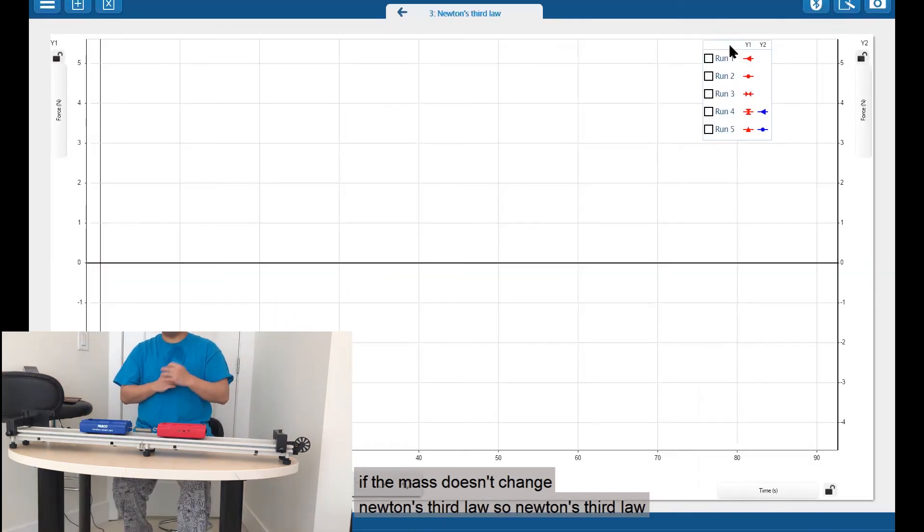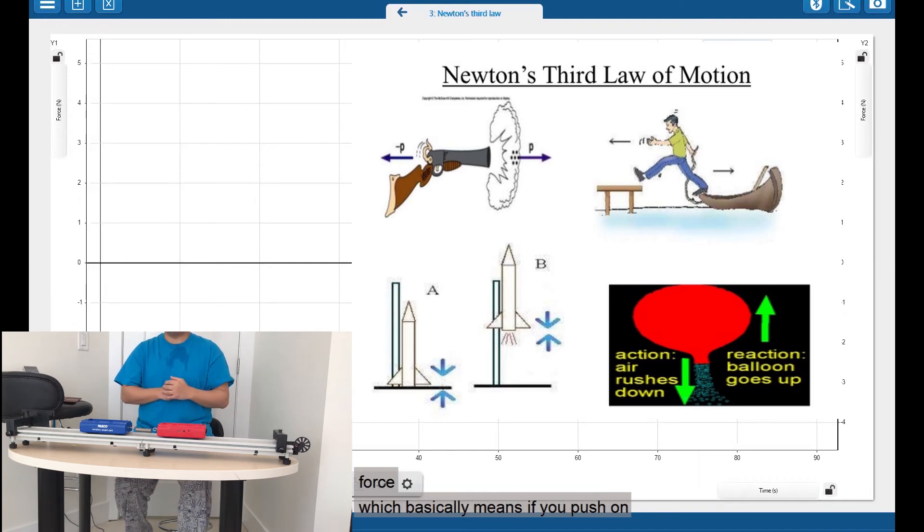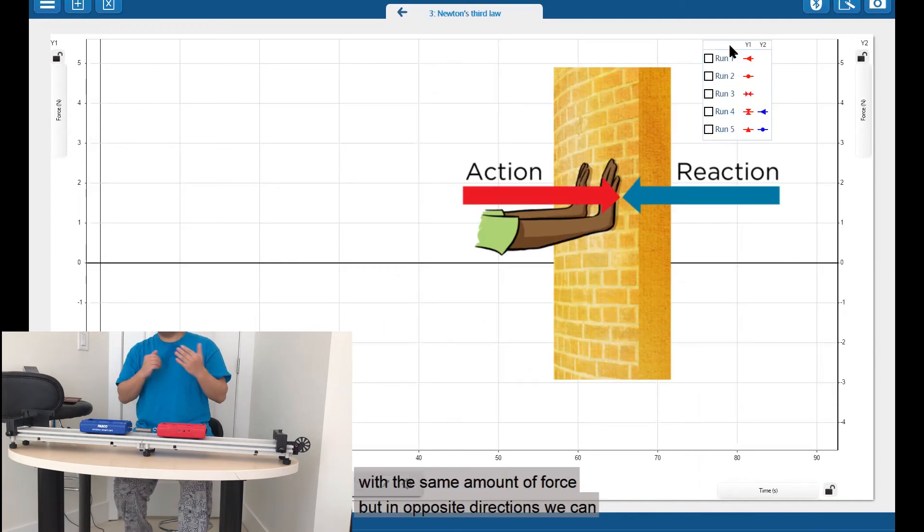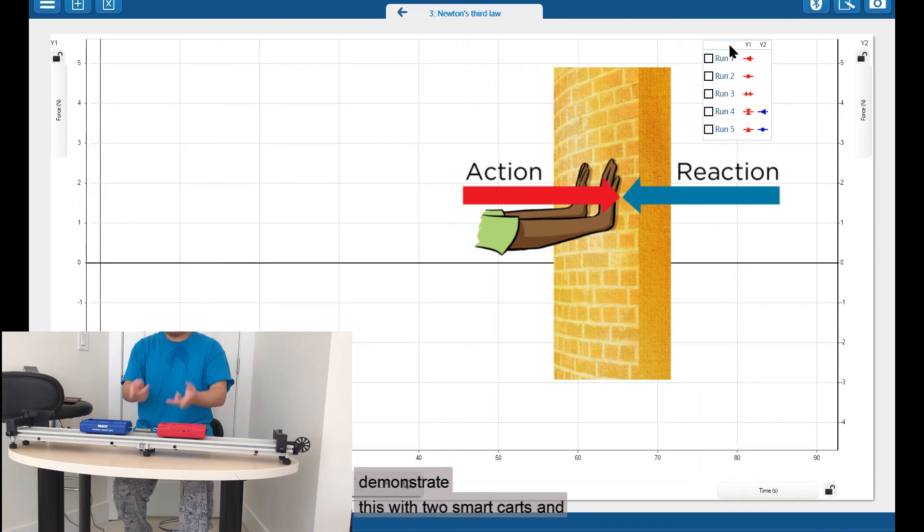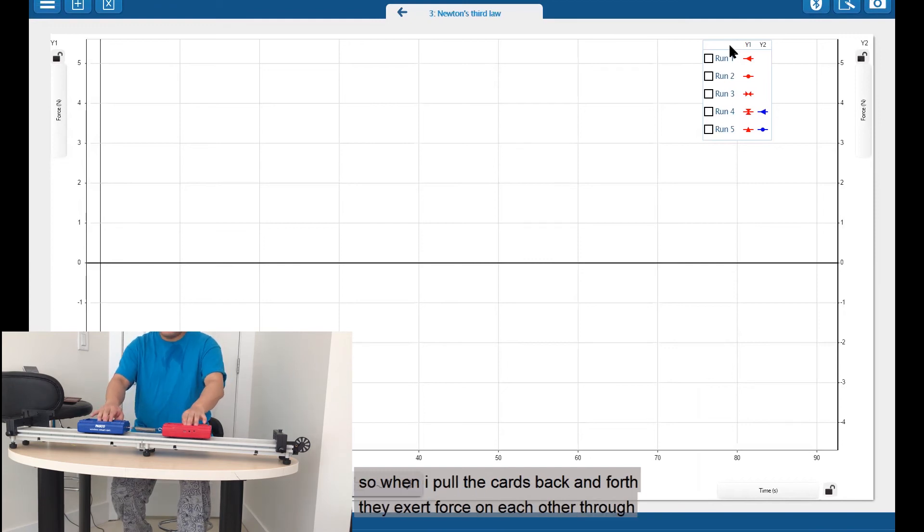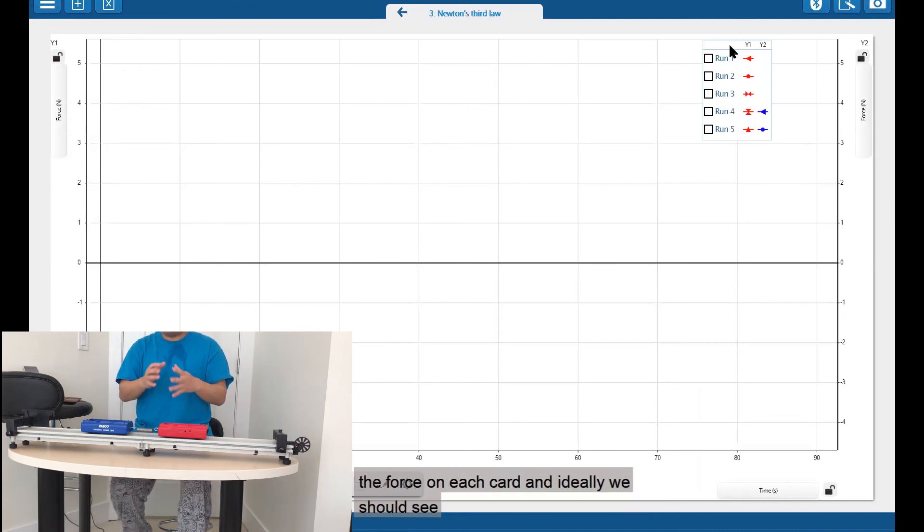Newton's third law. So Newton's third law states that for every action force, there's an equal but opposite reaction force. Which basically means, if you push on someone, then that someone is also pushing on you with the same amount of force, but in opposite directions. We can demonstrate this with two smart carts. And we're going to connect them with a spring. So the cart will exert force on each other through the spring. So when I pull the cards back and forth, they exert force on each other through the spring.